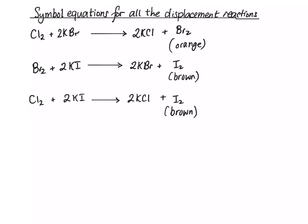So, the simple equations for all the displacement reactions are Cl₂ plus 2KBr goes to 2KCl plus Br₂, and this is orange in solution. Br₂ plus 2KI goes to 2KBr and I₂, iodine is brown in solution.